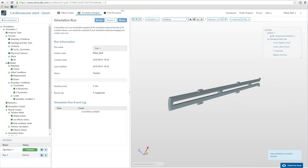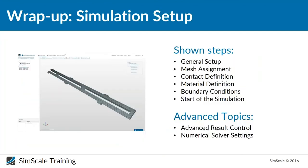Our simulation will be calculated in the cloud and we will get a notification when finished. To recap: we discussed the general simulation setup — static analysis with advanced non-linearity, how to assign the mesh and create topological entity sets to reduce work for boundary condition setup, the cyclic symmetry contact, defining the plastic material using the stress-strain table, and setting boundary conditions and numerical parameters. There are also advanced topics like additional result fields and modifying numerical settings for better, quicker results — but for the first step this is great.